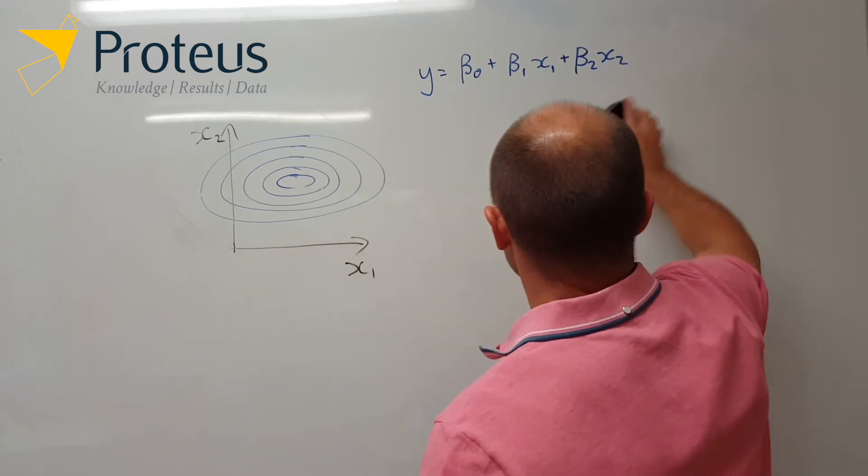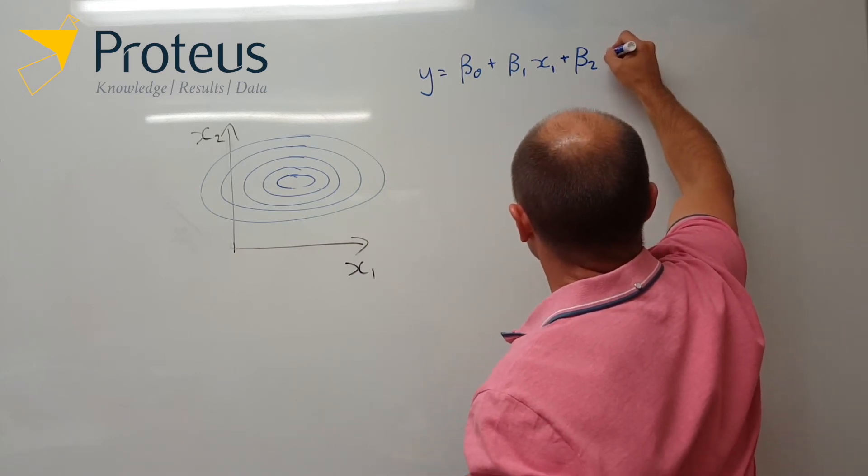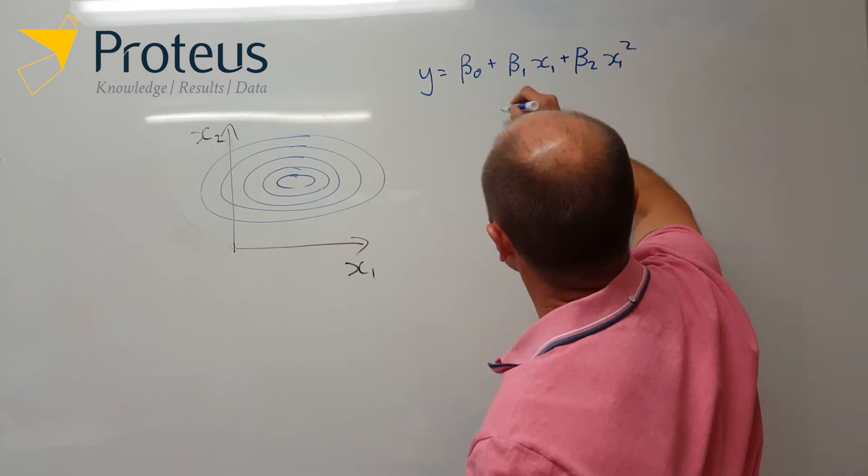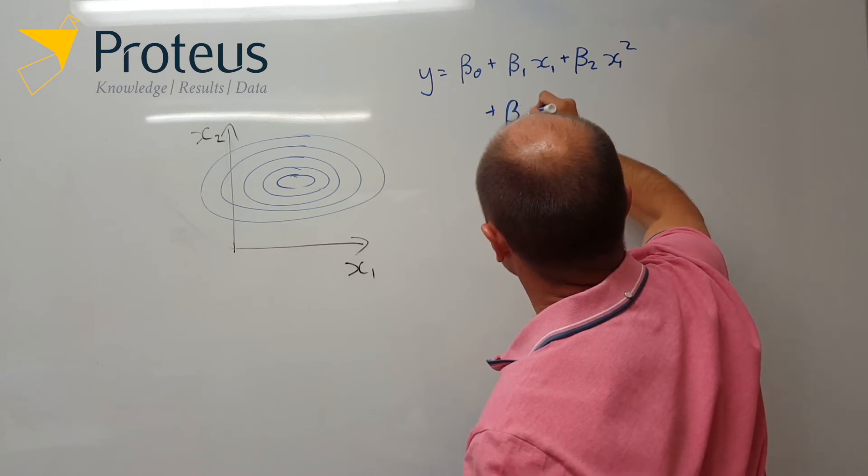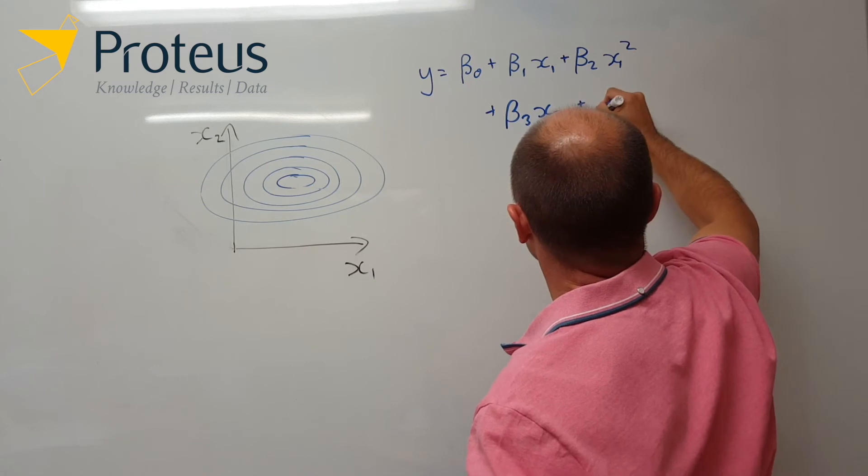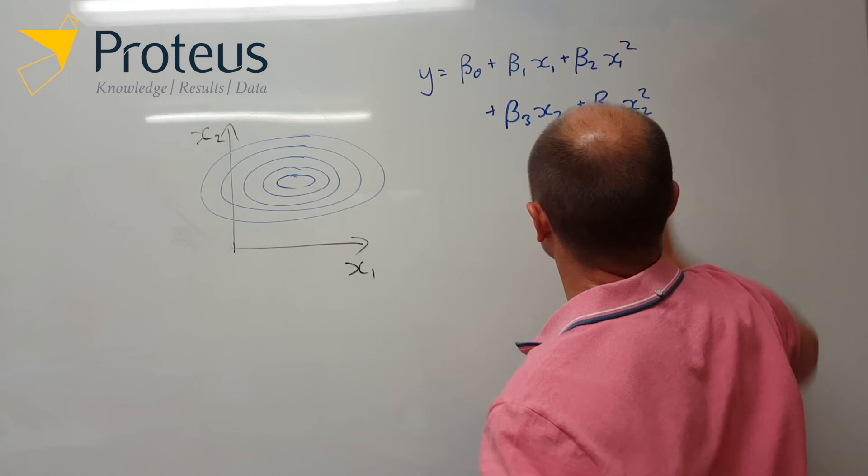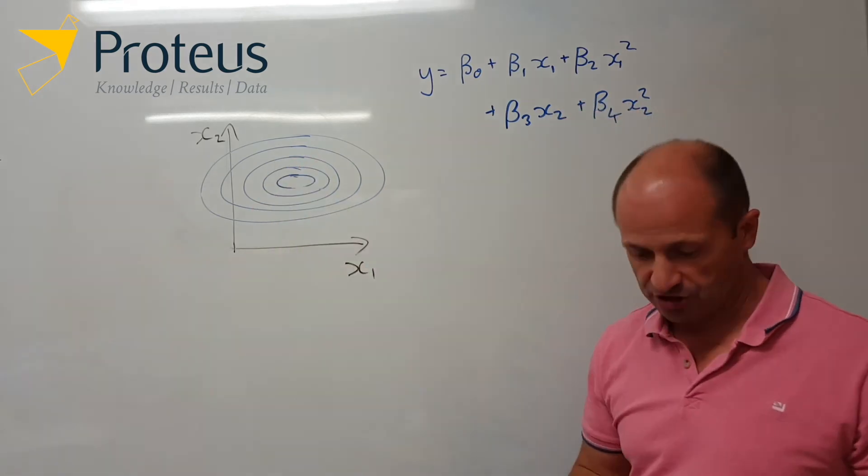And in the mathematical form, what we're saying is that we have this relationship here, so we've got some effect, and we've got x1 squared, and then we also have an x2, and then also an x2 squared. That gives us that sort of relationship.